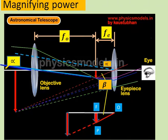So now, as far as the center of the eyepiece is concerned, we have the distant object subtending an angle alpha and the image subtending an angle beta.